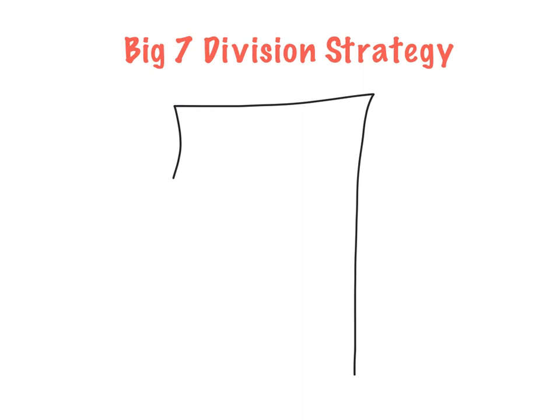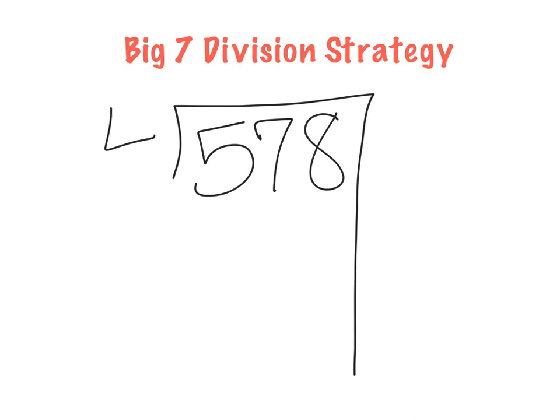We still have our dividend that will go inside of our big number 7, and our divisor — we'll use a divisor of 4. So we're going to start practicing with a single-digit divisor. This is our division problem: I have 578 divided by 4.